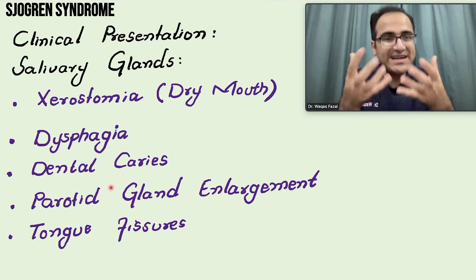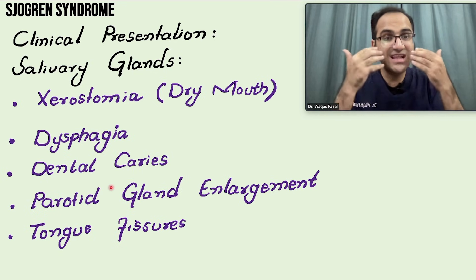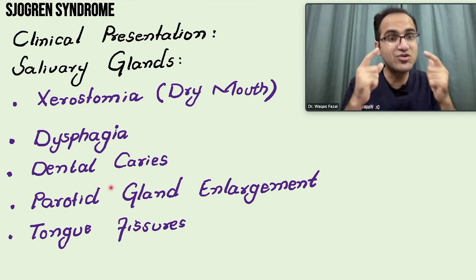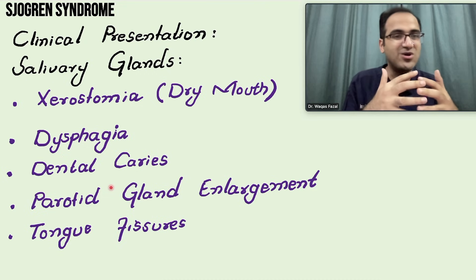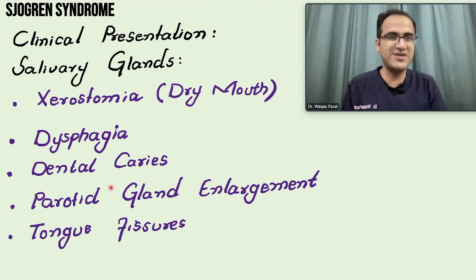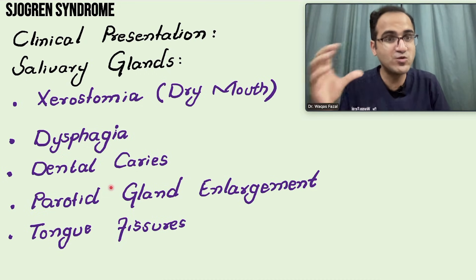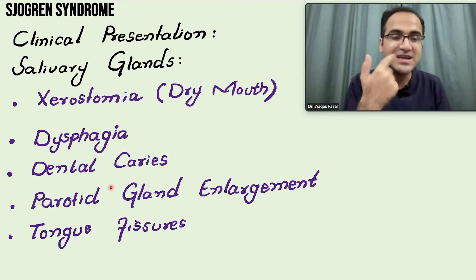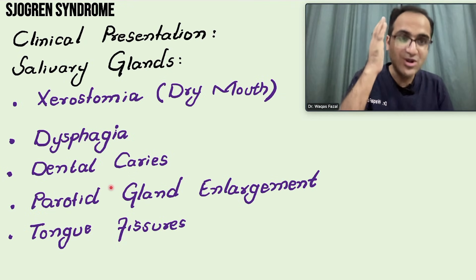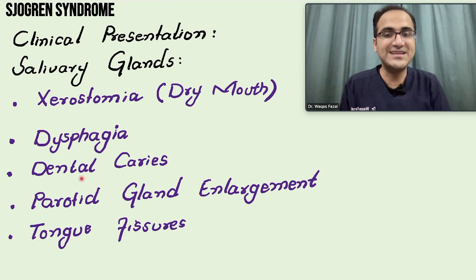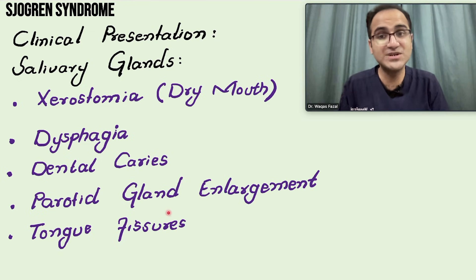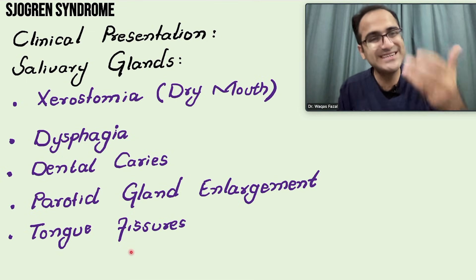Saliva protects the oral cavity through antibacterial activity and lubrication. When lubrication is lost — just like in an engine — everything grinds and dries out. The antibacterial activity is gone and bacteria grow on the teeth, resulting in dental caries. Parotid gland enlargement occurs due to damage of the parotid gland, and tongue fissuring results from dryness and damage to the tongue.